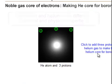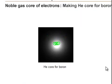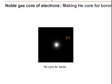Now take helium and make the helium 3+ core of electrons for boron by adding 3 protons, and then make the helium core for carbon by adding 4 protons.